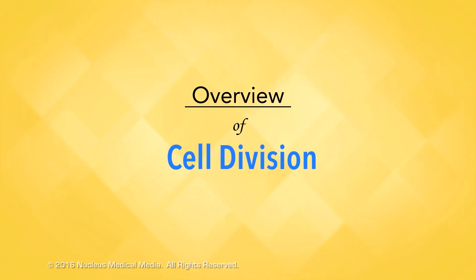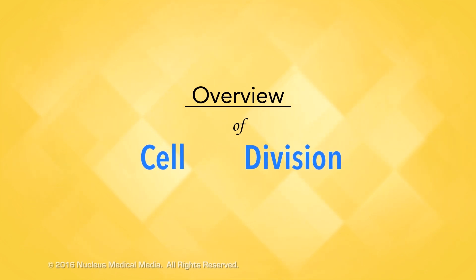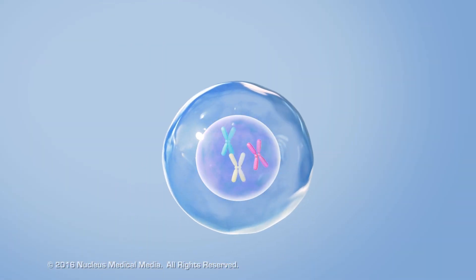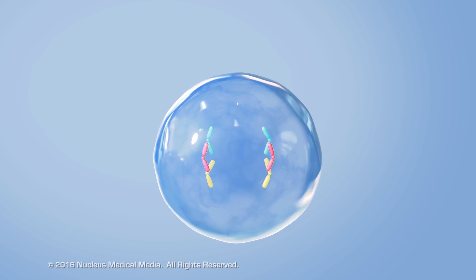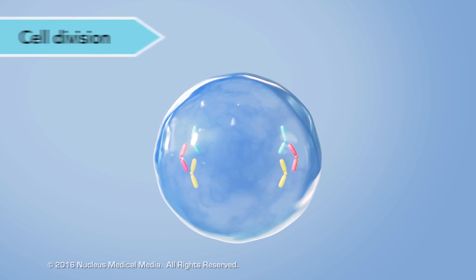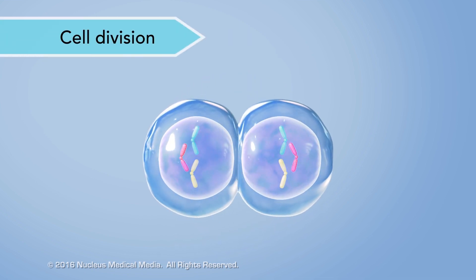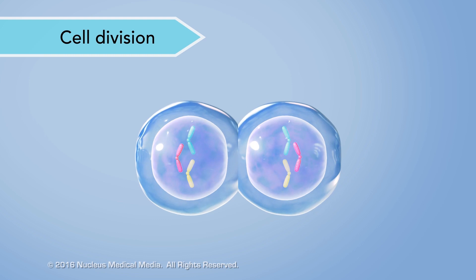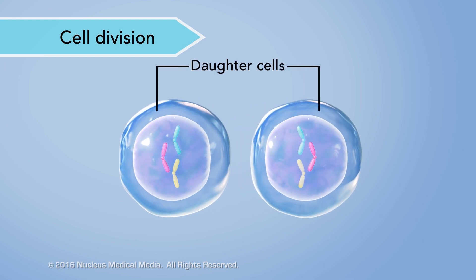In this lesson, we'll be talking about how cells reproduce. How and why do they do this? Well, they use a process called cell division to make new cells, called daughter cells.